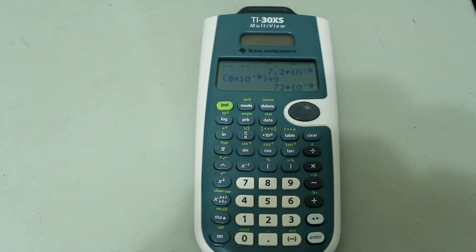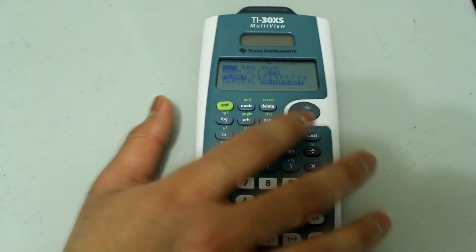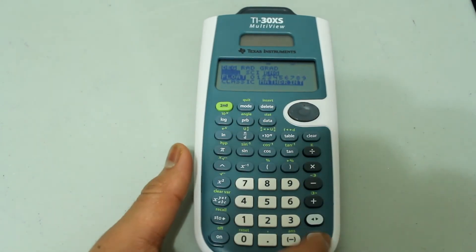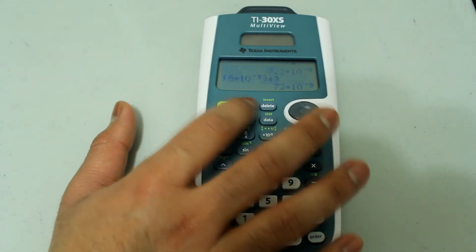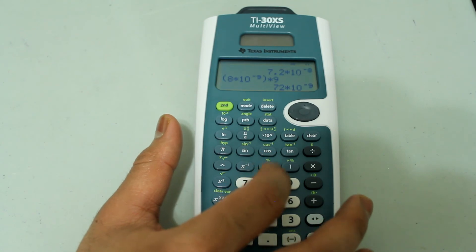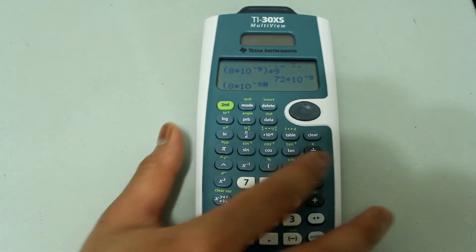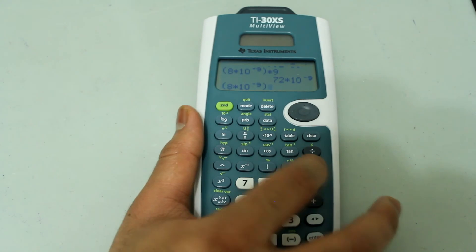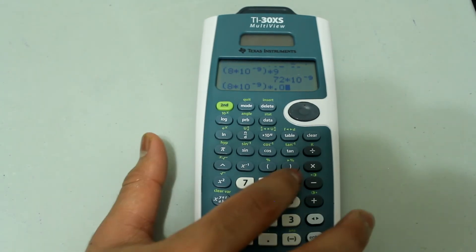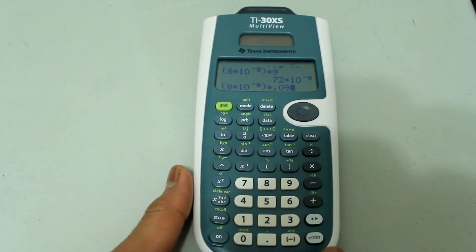And one more thing to note is even in norm mode, let's go back to norm mode. If the answer is really, really large, let's do 8 times 10 to the negative 9 times .09. If the answer is really large or really small, the calculator will still display the answer in scientific notation.